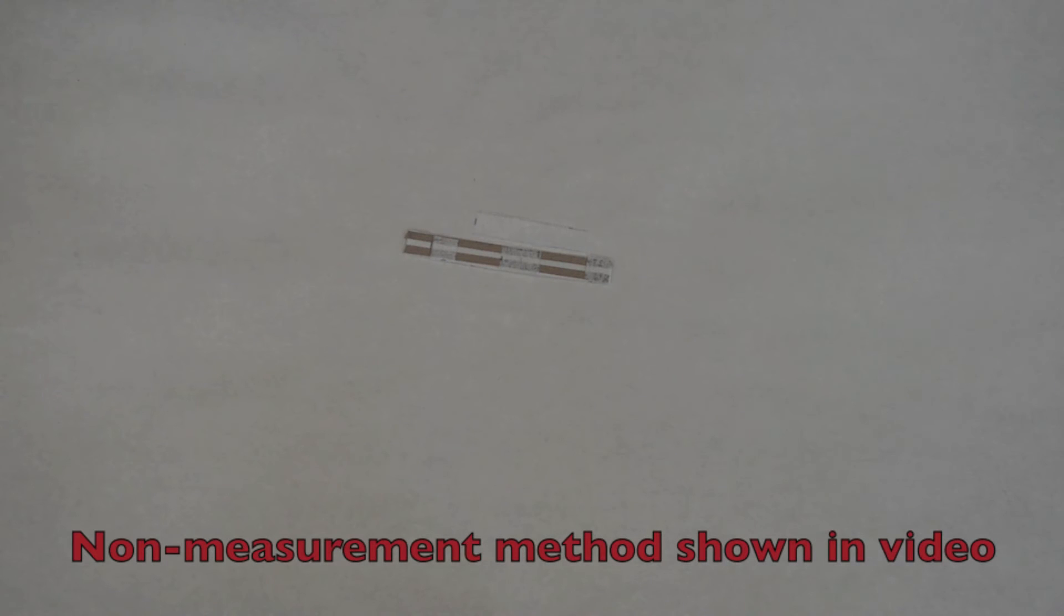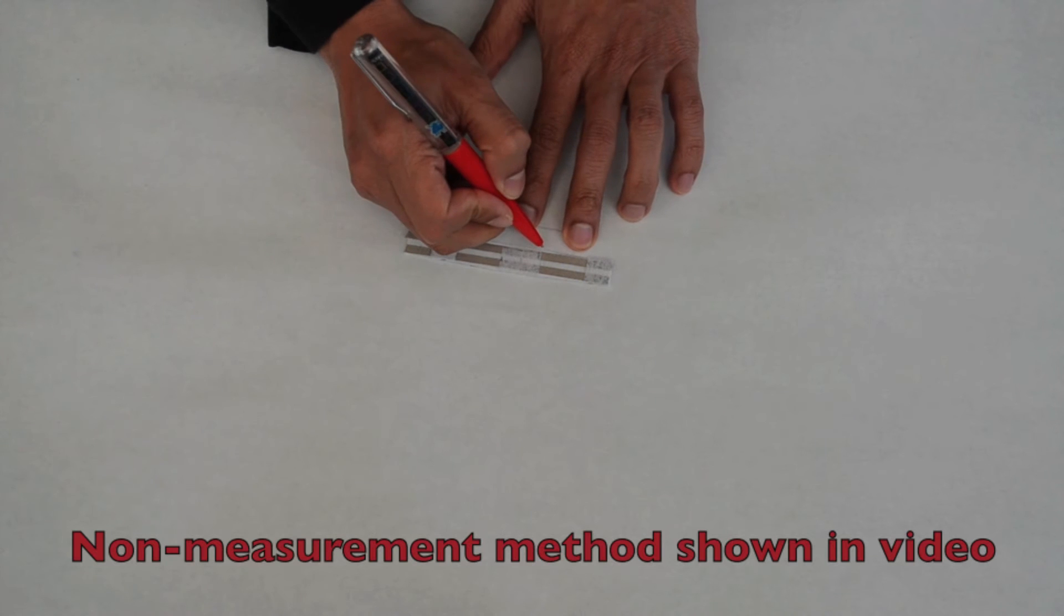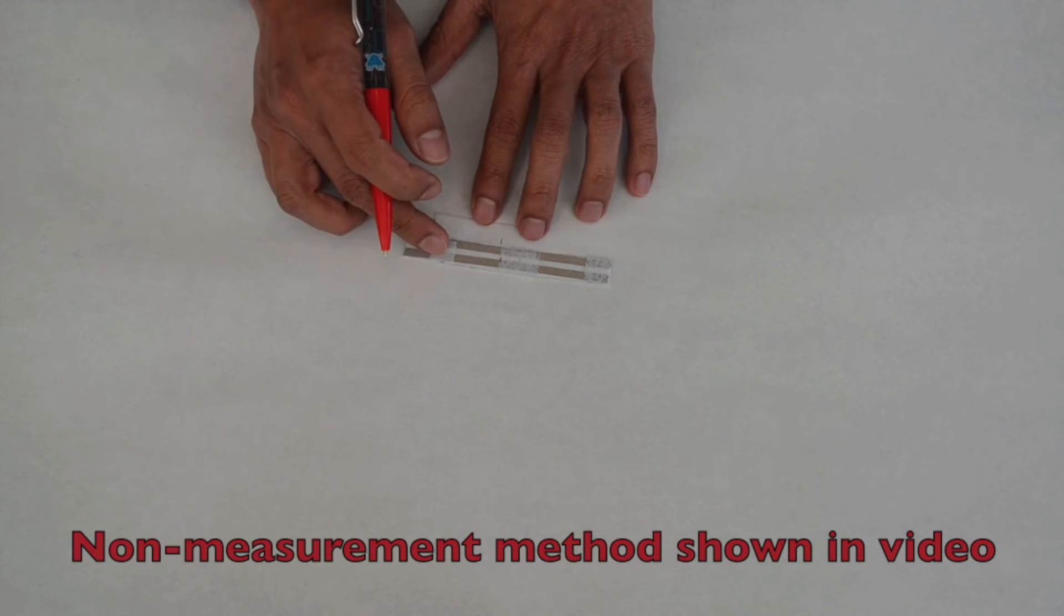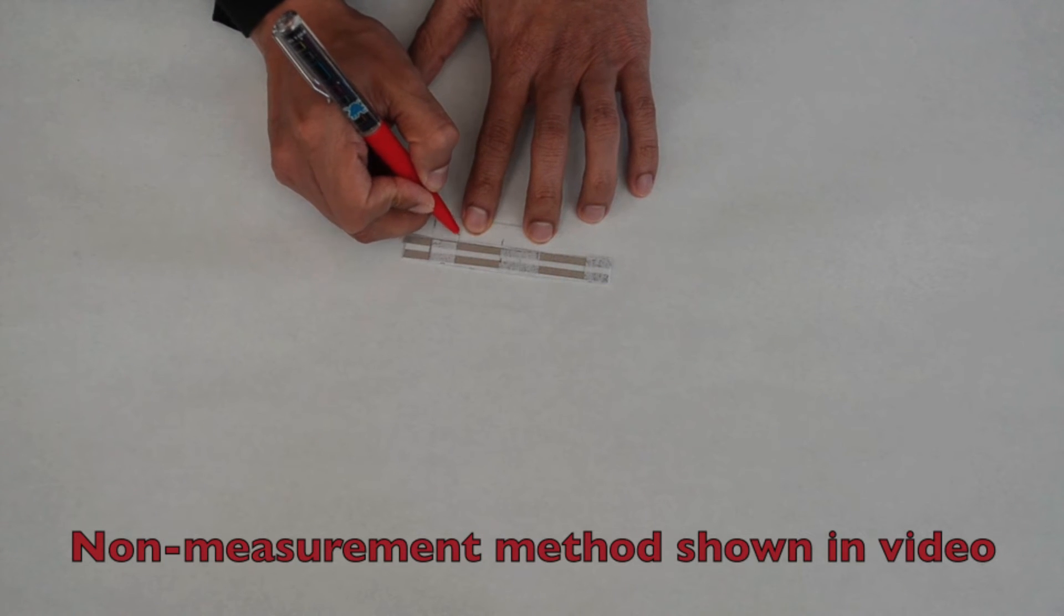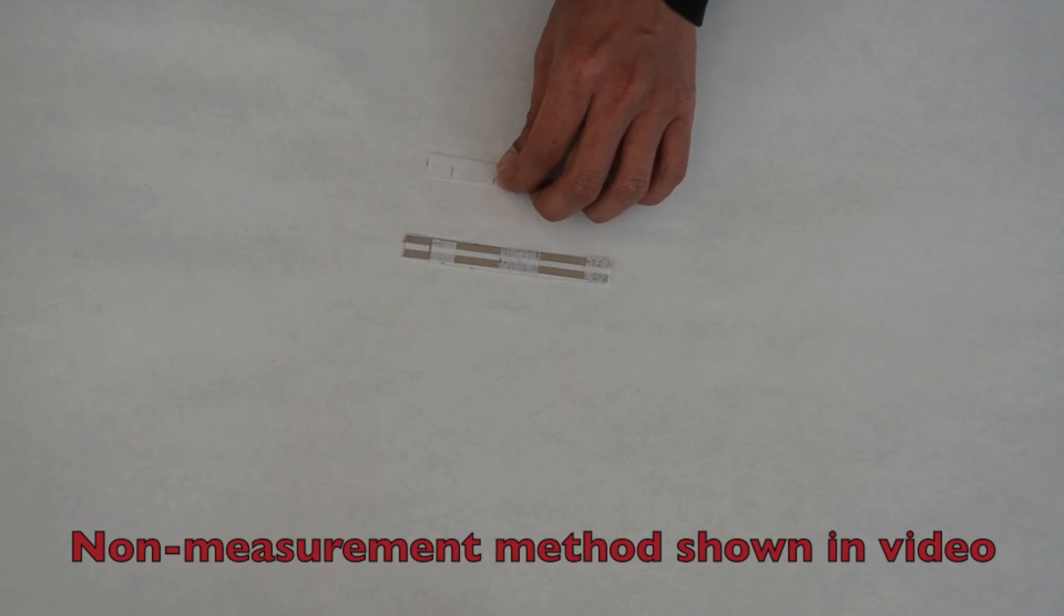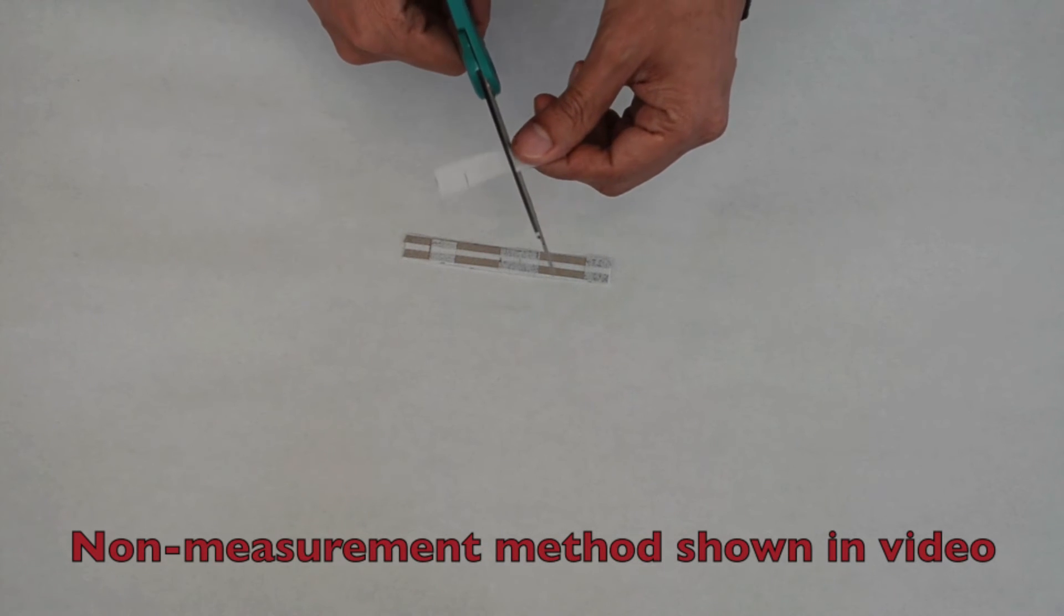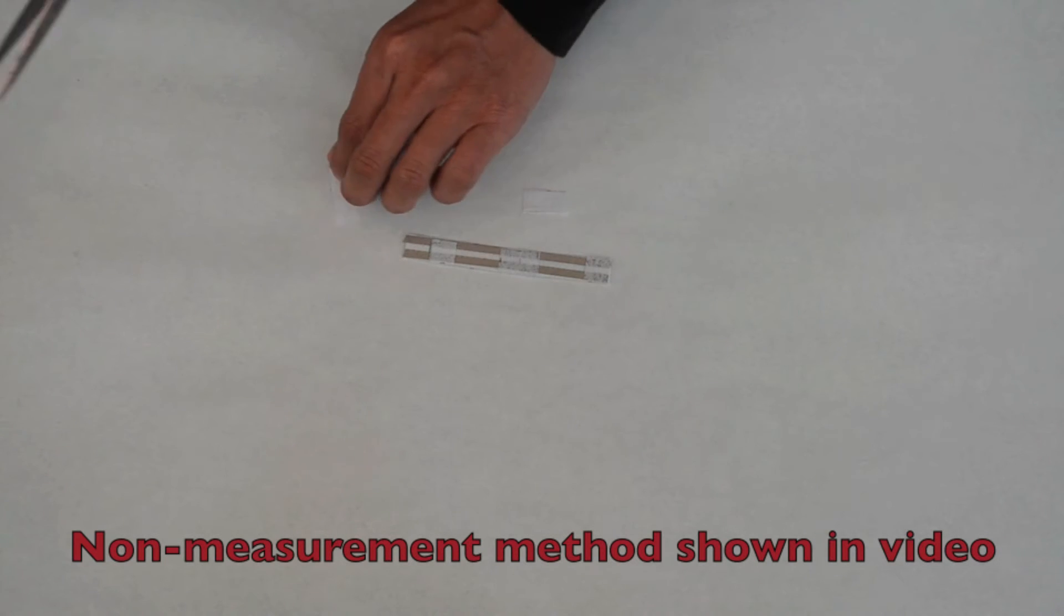Now we need to take the two and one fourth inch piece of fusible fabric that was left over from earlier and cut off half of an inch from the end. We won't be using this half inch piece. Now take the remaining one and three fourths inch piece of fabric and fold it in half to create a crease in the center. Cut the fabric in two at the crease so that you now have two 0.875 inch pieces of fabric.